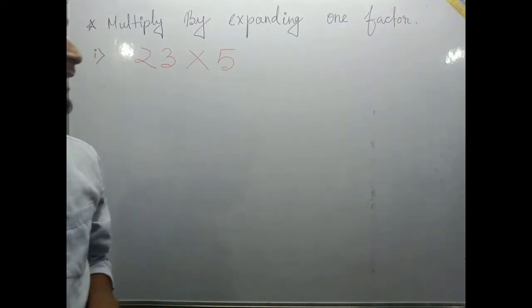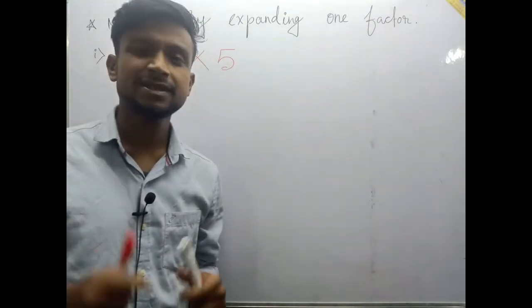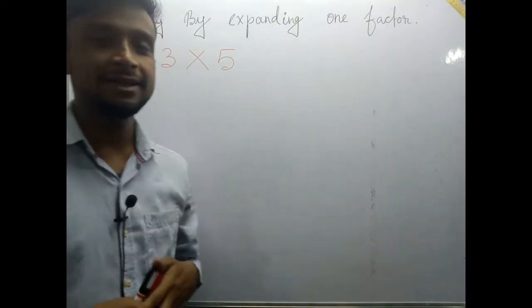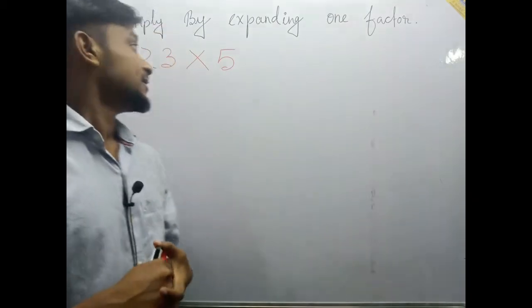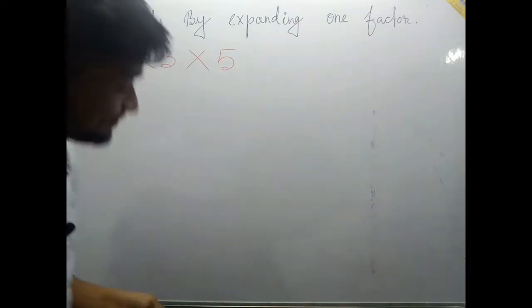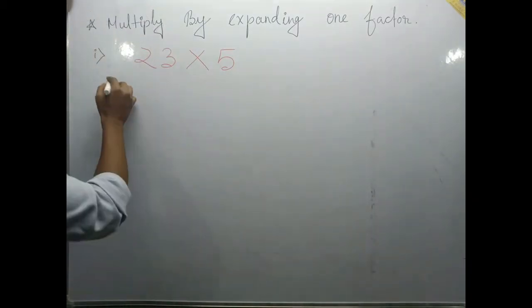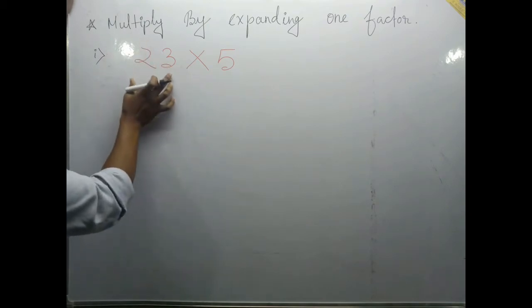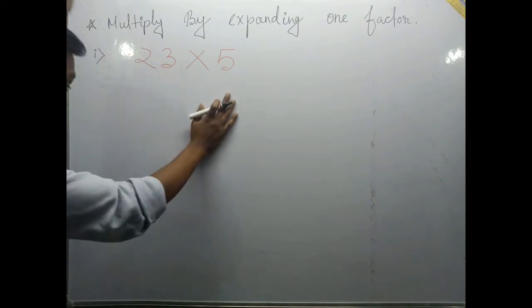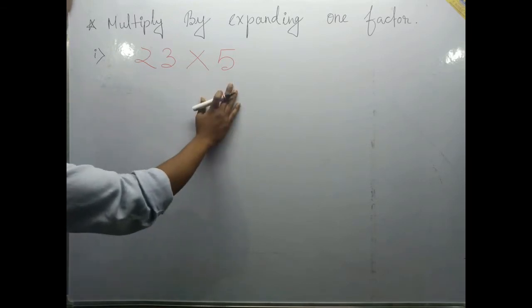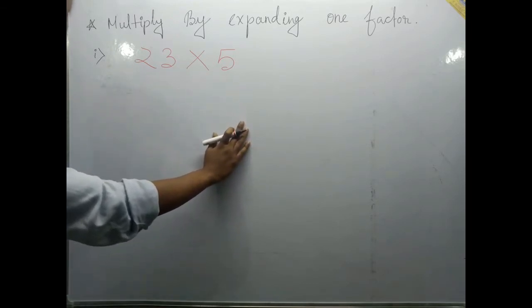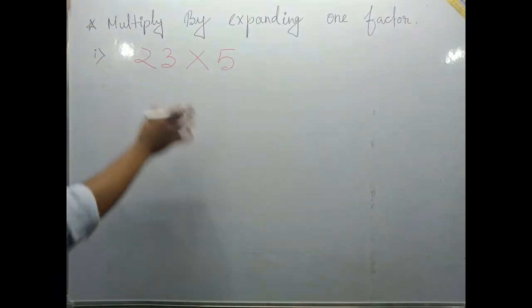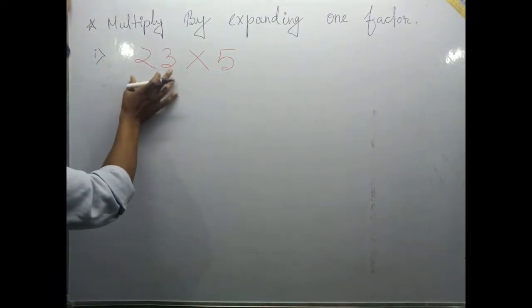Multiplication by expanding one factor. It's a very simple concept, we just need to know how to expand a number. Let's take one example: 23 multiplied by 5. We will expand the bigger factor, always we will expand the bigger number.